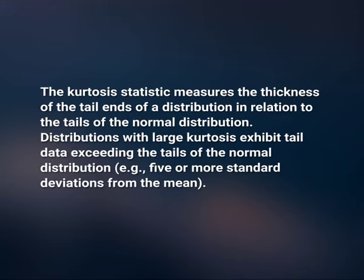The kurtosis statistic measures the thickness of the tail ends of a distribution in relation to the tails of the normal distribution. Distributions with large kurtosis exhibit tail data exceeding the tails of the normal distribution — for example, 5 or more standard deviations from the mean. Distributions with low kurtosis exhibit tail data that is generally less extreme than the tails of the normal distribution. The normal distribution has a kurtosis of 3, which indicates the distribution has neither fat nor thin tails. Therefore, if an observed distribution has a kurtosis greater than 3, it is said to have heavy tails; if less than 3, it is said to have thin tails when compared to the normal distribution.